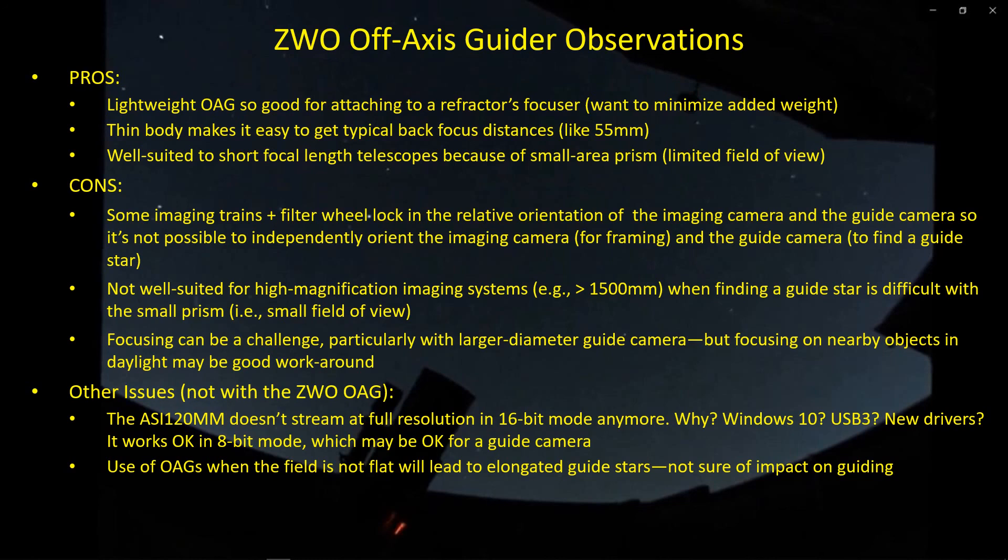In conclusion, I like the ZWO off-axis guider, I think it's going to work great. I've been trying it out for the past couple of days on my 700 and 250 millimeter scopes and I don't have any issues. I highly recommend the ZWO off-axis guider if you can find an application within the pros and cons that I've mentioned. I think you'll be in pretty good shape. All right, thanks for watching.